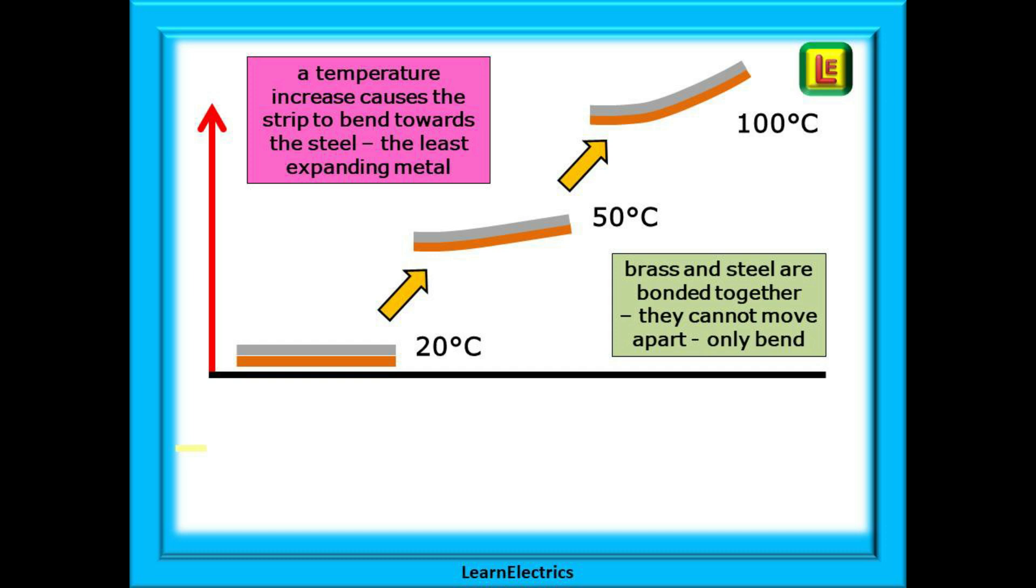Because they are bonded together they cannot move apart or slide over one another. The only thing that they can do is distort and bend, and this bending will always be towards the steel part.